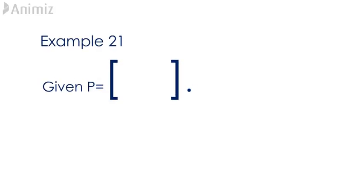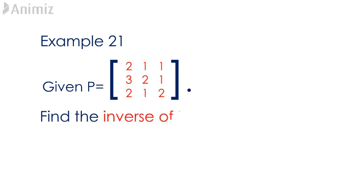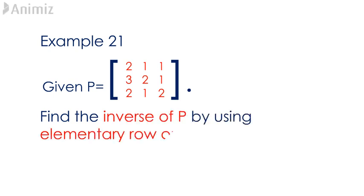Example 21. Given P is a matrix containing the elements 2 1 1, 3 2 1, 2 1 2, find the inverse of P by using elementary row operations.